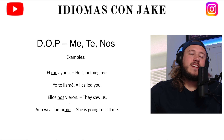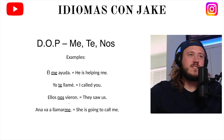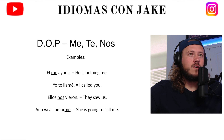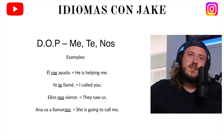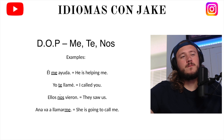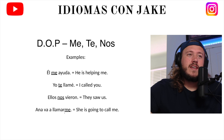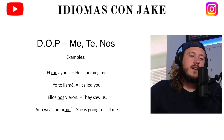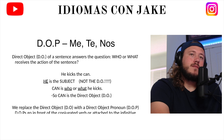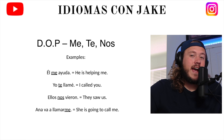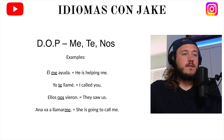Ellos nos vieron. El sujeto siempre va al inicio de la oración — the subject always goes at the beginning of the sentence. Ellos — they — that's my subject. They saw. In English I put my direct object pronoun afterwards: 'us.' In Spanish, I put it right before the conjugated verb: Ellos nos vieron — they saw us. Ana va a llamarme — she is going to call me. Note that I can put the pronoun at the end attached to the infinitive: Ana va a llamarme. Or I could also say Ana me va a llamar — putting it in front of the conjugated verb va. Both sentences mean exactly the same thing: Ana is going to call me.